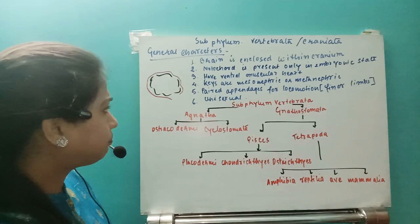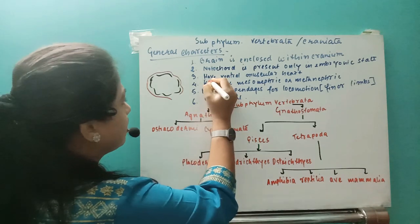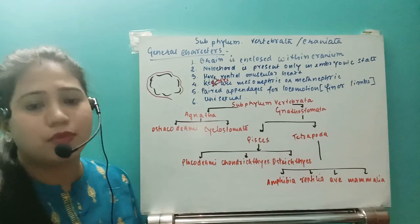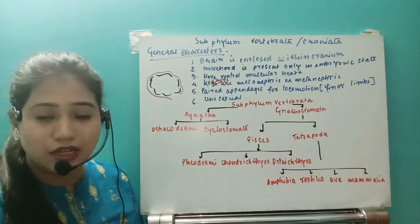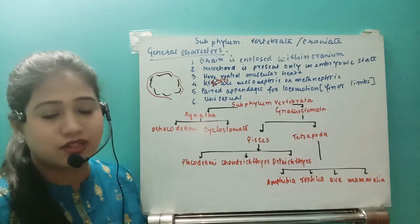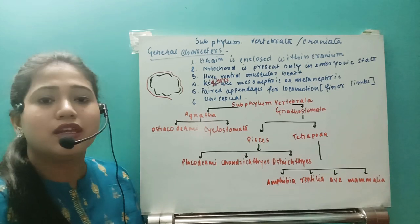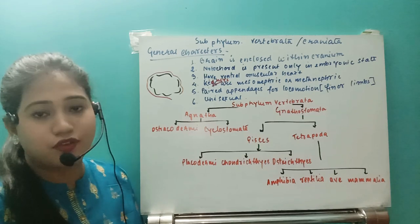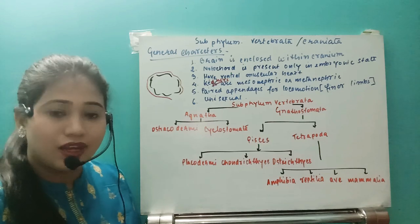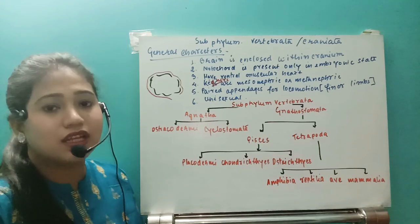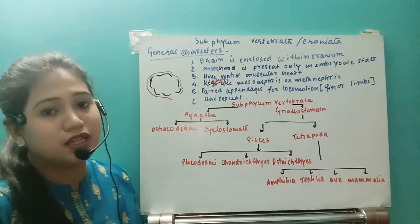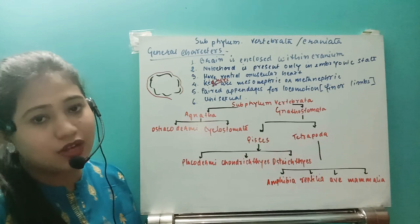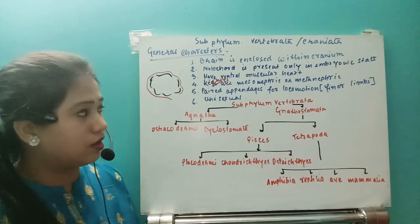The kidneys in vertebrates are mesonephric or metanephric. Kidneys perform two functions: filtration and urine formation for purification, and maintaining water and salt balance.